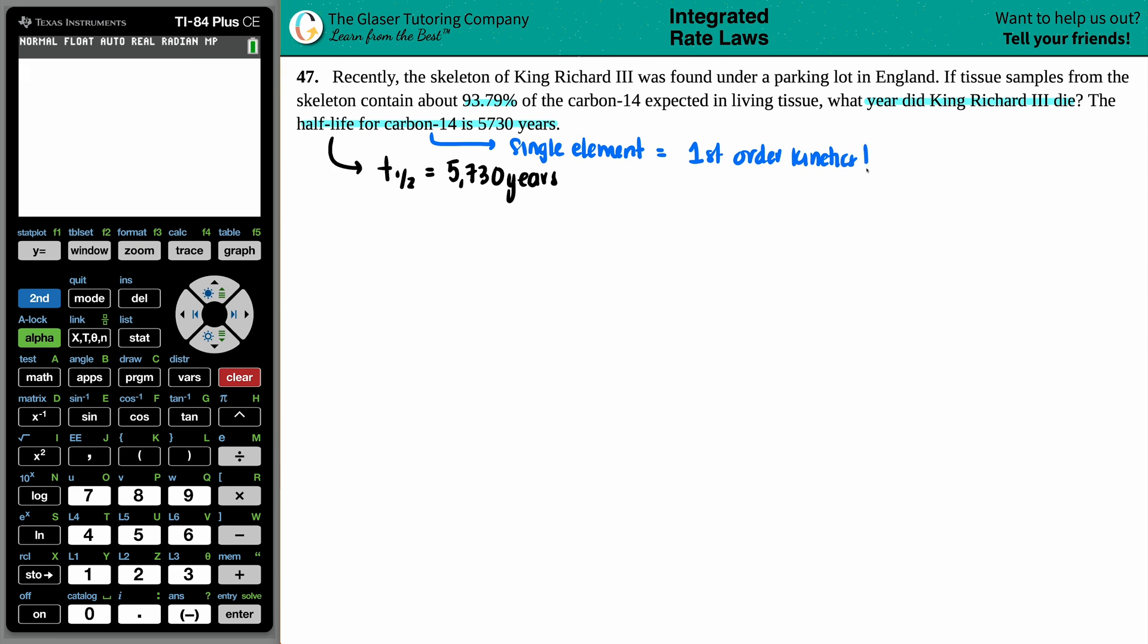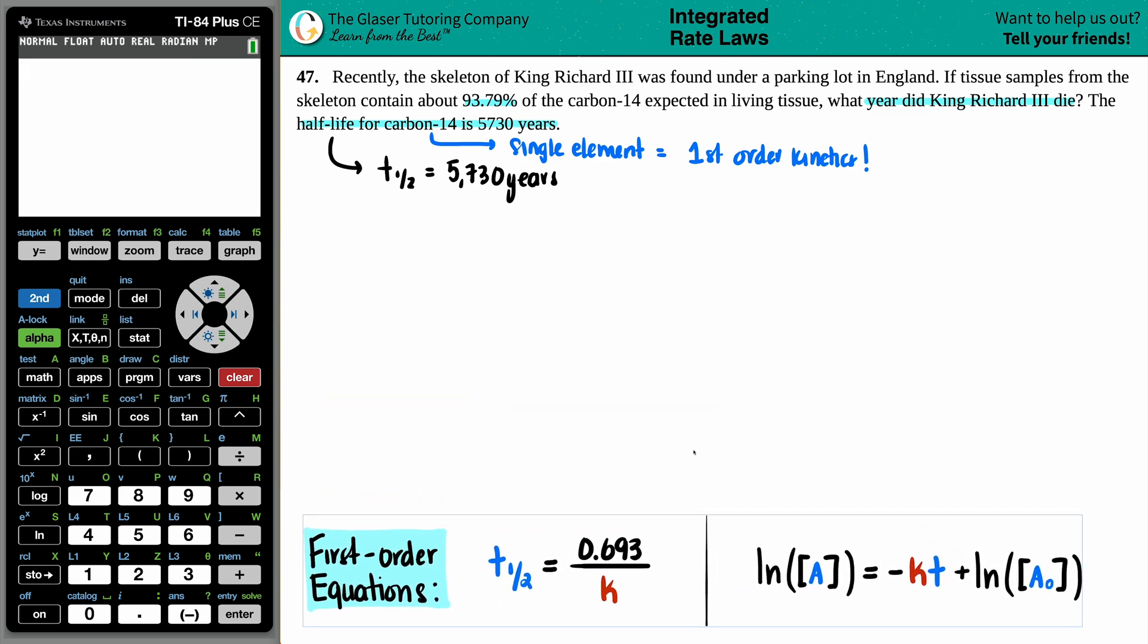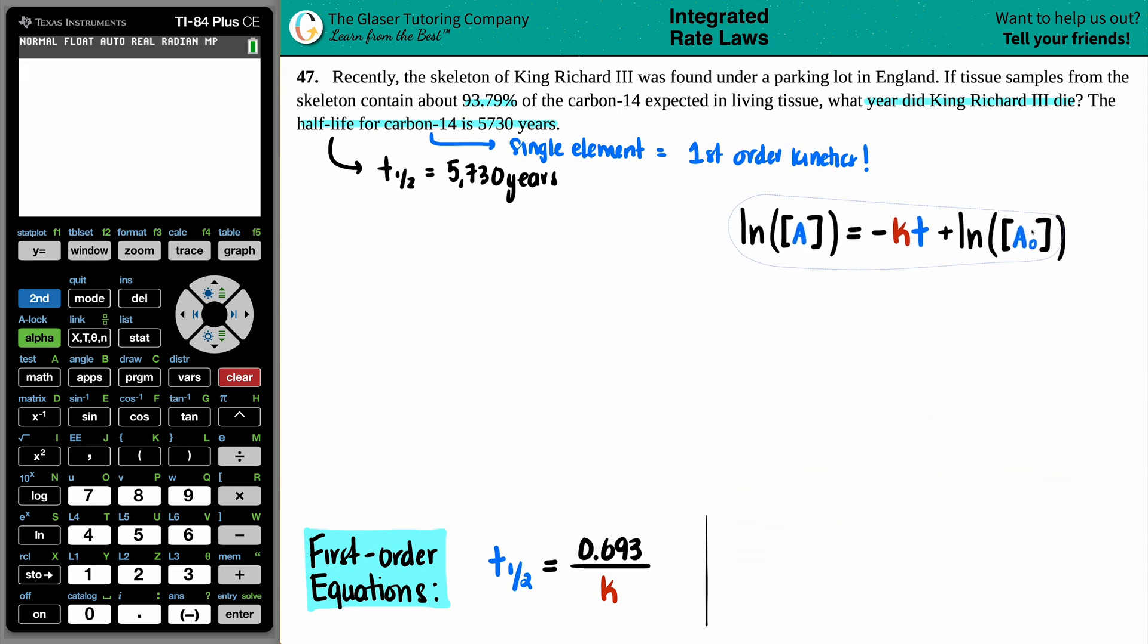So if they don't tell you, you know, what order you're in, chances are it's going to be first-order because they're going to give you a single element to work with. So now we have to bring in all of our first-order kinetic equations. There's two, and that's these right here. So my first-order equations are going to be my handy-dandy half-life equation and the integrated rate law that depicts initial amounts to final amounts. But in this case, they gave us a half-life, right? So here's the formula that uses the half-life equation, and this is probably the one that we're going to be using. Or wanting to use. Let's see. Let's bring this one up.